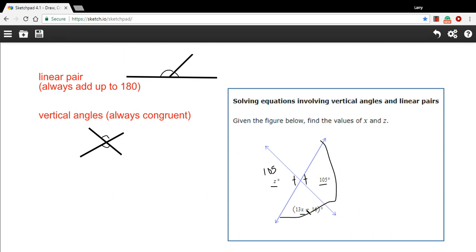If I add this and this and set it equal to 180, then I can solve that equation for x. So let me write that out: 105 plus 13x minus 16 equals 180.